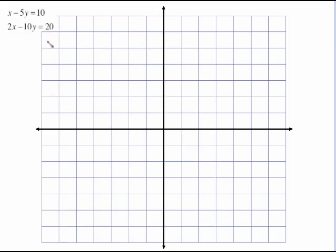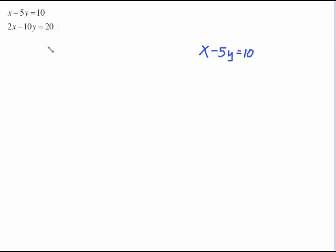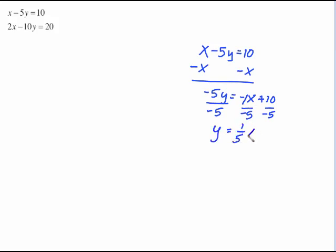Starts out in non-slope-intercept form, so we need to rewrite. To rewrite this one I'll start out by subtracting x from both sides, which gives us negative 5y equals negative x plus 10. Solve by dividing everything by negative 5. There's a little 1 sitting here in front of the x and that's going to help me name my slope. A negative 1 divided by negative 5 is a positive 1 fifth. 10 divided by negative 5 is negative 2.